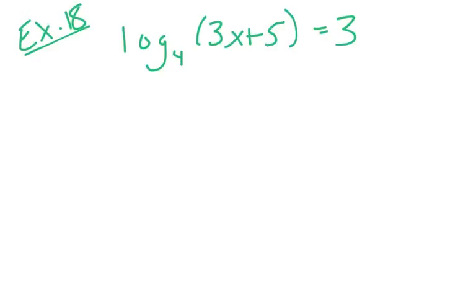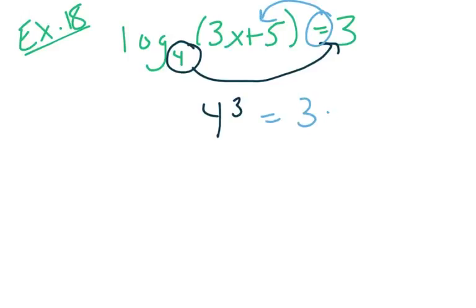Now this problem doesn't have more than one log, this is just a little bit of a review. Because there's nothing to combine or condense, we get to just start by rewriting it. So I'll take this 4 to the power of 3, and then equals 3x plus 5. So 4 to the power of 3 is 64.